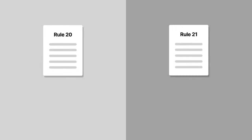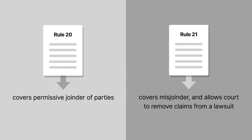Rule 20 of the Federal Rules of Civil Procedure covers permissive joinder of parties. Rule 21 covers misjoinder and allows the court to remove claims from a lawsuit.